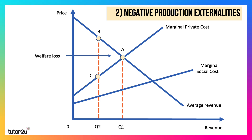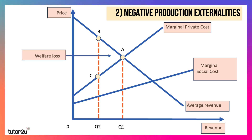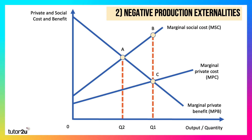Here's number two: Negative Production Externalities. This is a diagram showing the economic and social costs — private and social costs — from negative production externalities such as chemical pollution. There are multiple errors. They've confused private and social costs; social costs must lie above private costs. They've put price on the y-axis where it should be cost and benefit, and revenue on the x-axis where it should be output or quantity. Because they've confused social and private costs, they've drawn a welfare loss diagram which is incorrect. The social optimum is less than the private optimum. Given the private optimum is at Q1, the social optimum will be Q2, and the deadweight welfare loss will be the area ABC.